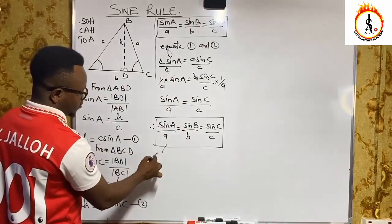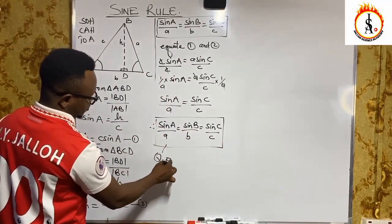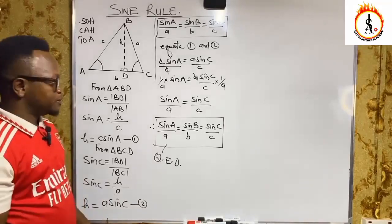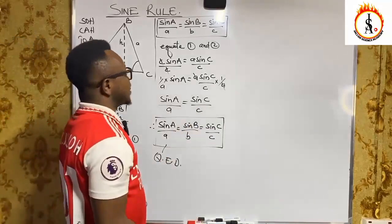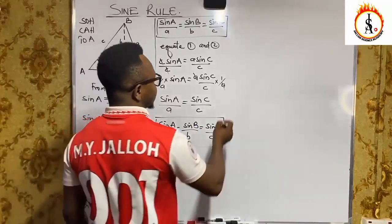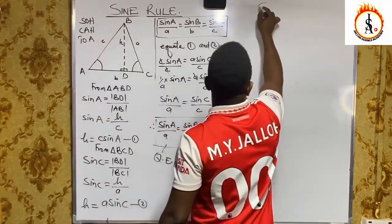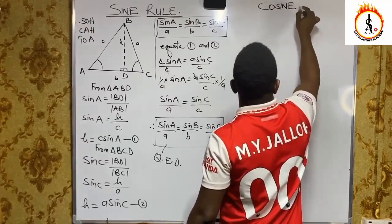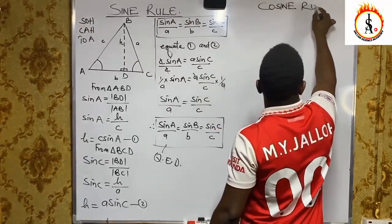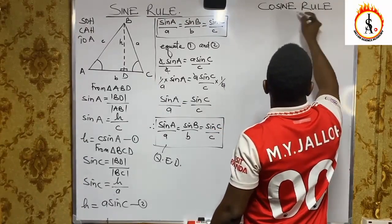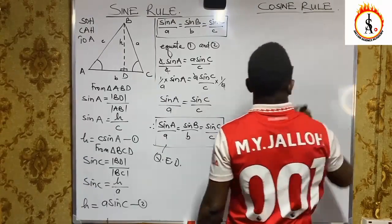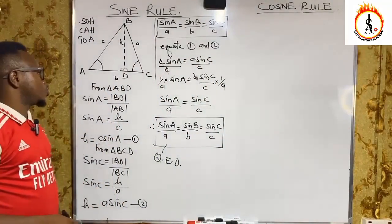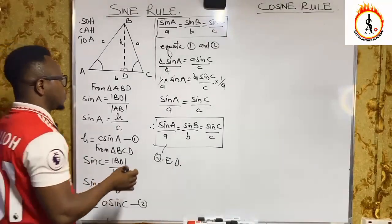So this is your sine formula. For those that love Latin, they will say QED — quod erat demonstrandum. So it has been derived. Next, we'll look at the cosine rule.